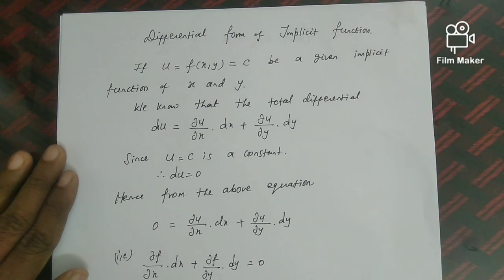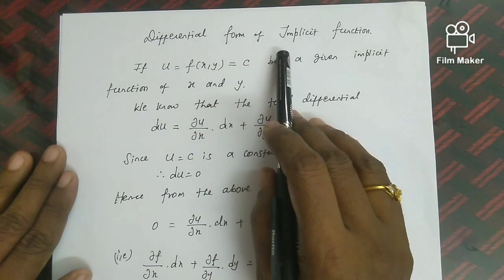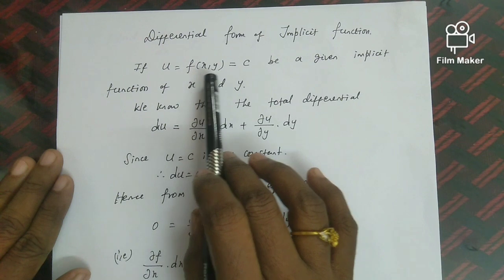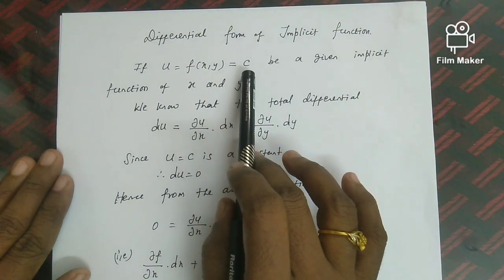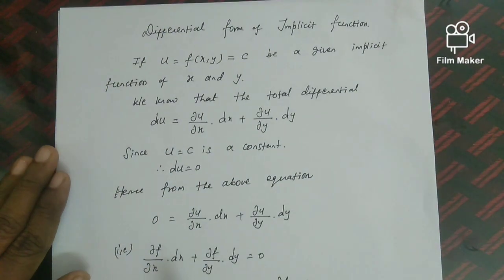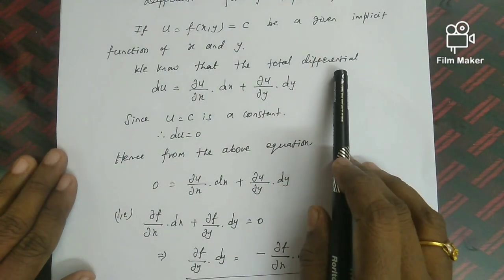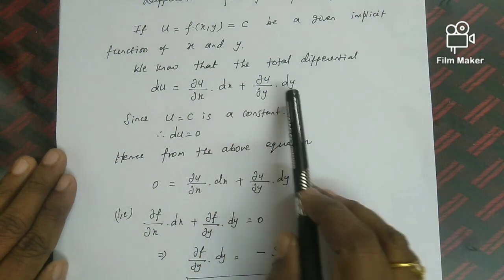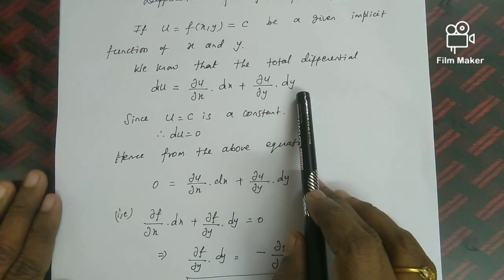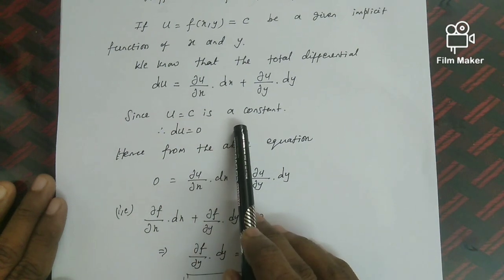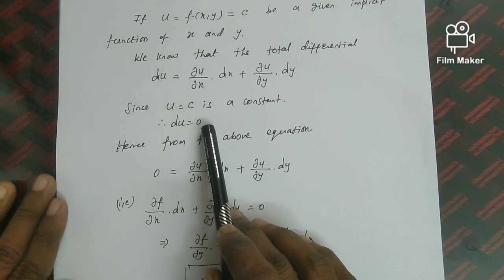Welcome to the lecture series of functions of several variables. Today we will look at the differential form of implicit functions. If u = f(x, y) = c is a given implicit function of x and y, we know that the total differential du = (∂u/∂x)dx + (∂u/∂y)dy. Since u = c is a constant, du = 0.